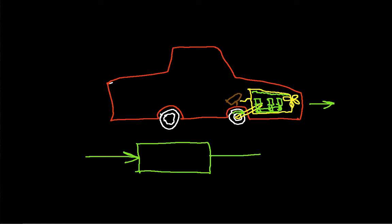And this system has an input. In this case, the input might be the gas pedal. It has an output. The output might be the speed of the car. Okay?